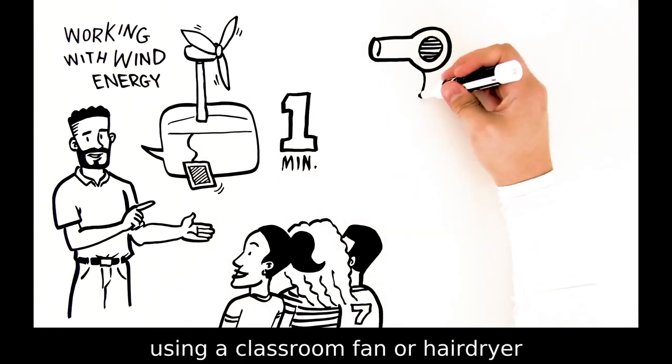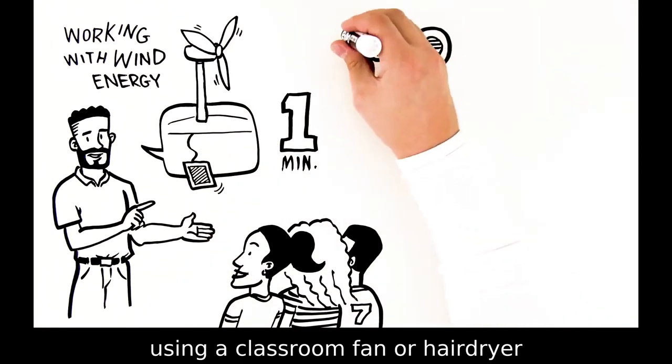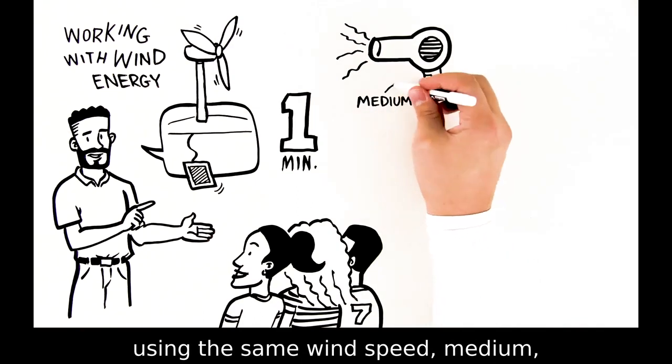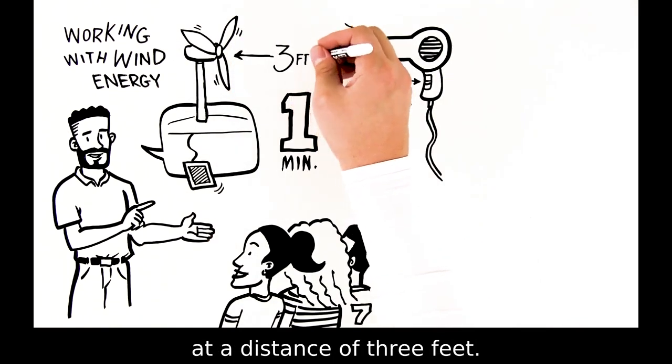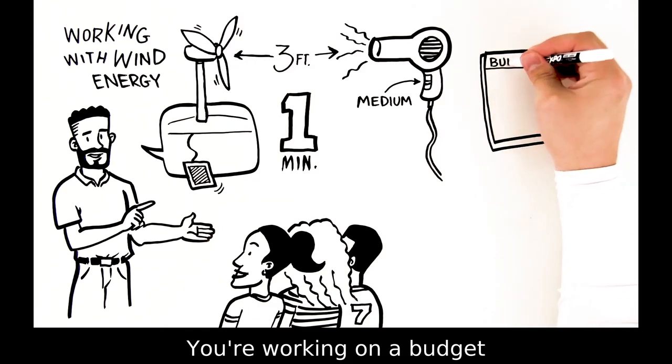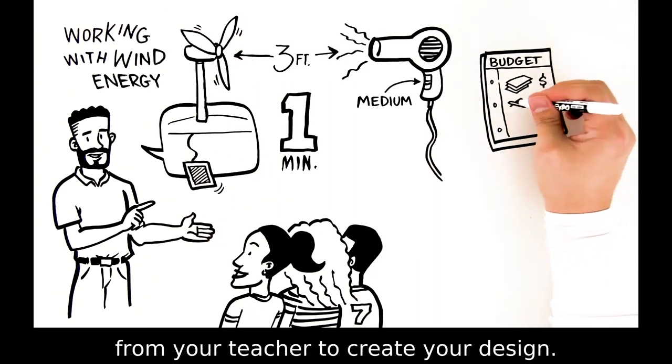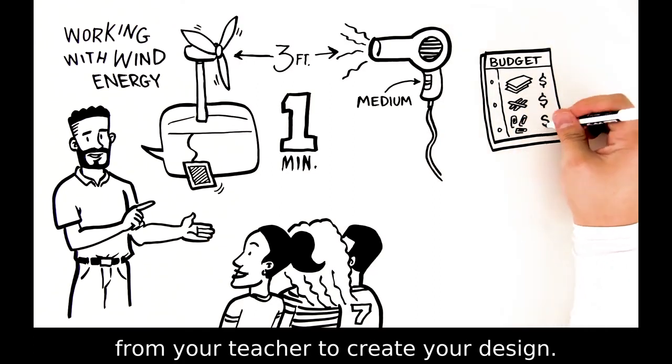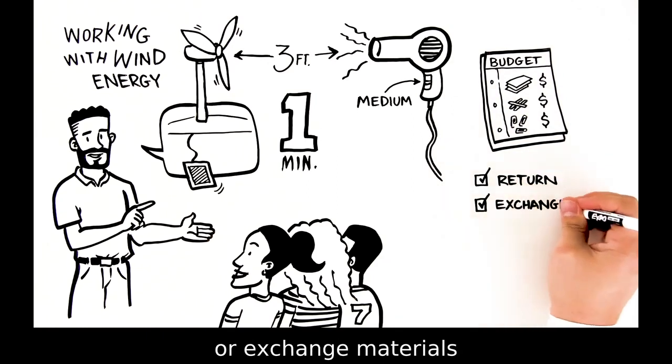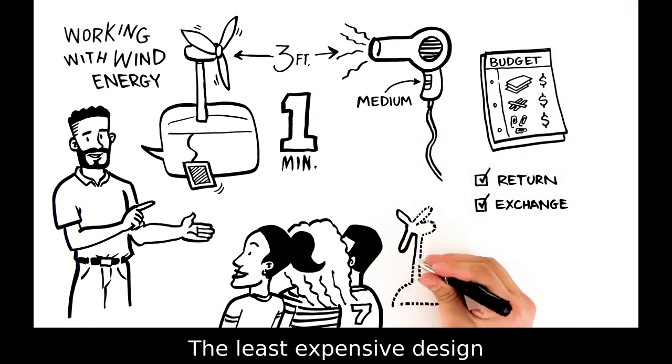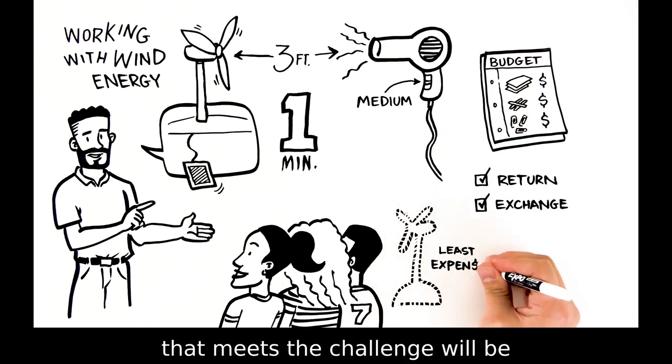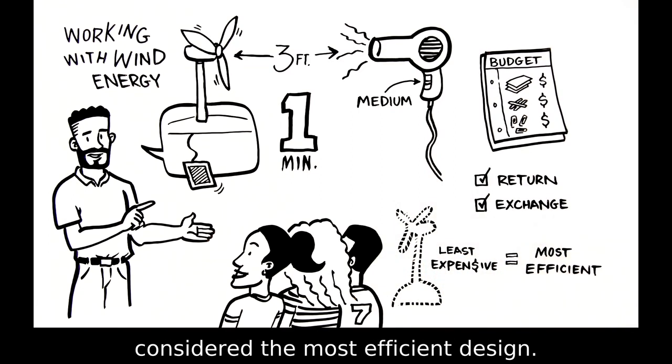Each team will test their windmill using a classroom fan or hairdryer using the same wind speed, medium, at a distance of three feet. You're working on a budget and will have to purchase materials from your teacher to create your design. You may return materials or exchange materials with other teams. The least expensive design that meets the challenge will be considered the most efficient design.